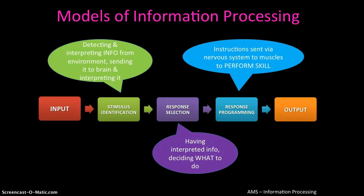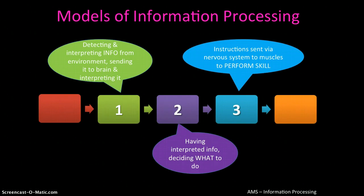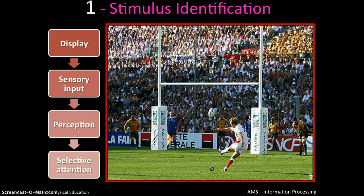Having interpreted the situation, you decide on the best action: do I run, do I pass, do I kick? Having decided, you response program — sending a set of instructions through the nerves to specific muscles to put your decision into action. Nervous impulses carry information to your muscles to make you run, and that is your output. So the process has three parts: stimulus identification, response selection, and response programming.